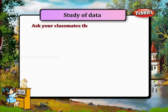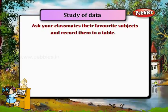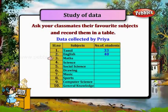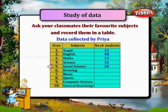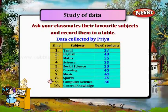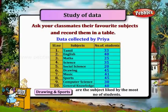Ask your classmates their favorite subjects and record them in a table like this. Data collected by Priya: Tamil 33 students, English 40, Maths 25, Science 35, Social Science 20, Drawing 45, Music 41, Sports 45, Computer Science 30, General Knowledge 40. Drawing and sports are the subjects liked by the most number of students.